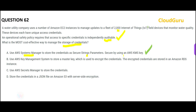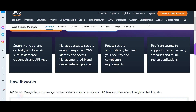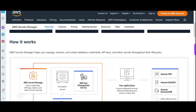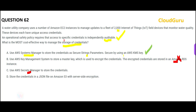Option A looks correct. Option D is wrong because they are saying to store credentials in an RDS database — we never store credentials that way. In AWS there is a right way of doing things. Option C mentions Secrets Manager, which manages the lifecycle of secrets such as database credentials or API keys, but in our question these are credentials for devices, not a database.